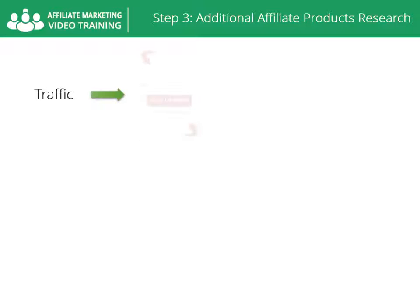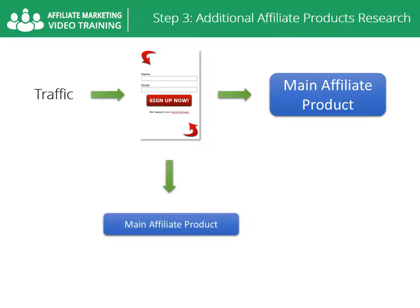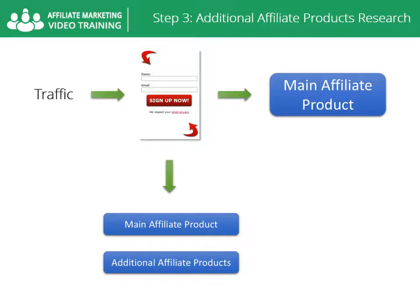All of your traffic will be sent to your squeeze page, which collects the contact information of your visitors who are highly interested in your topic. Then, besides sending your free subscribers straight to your main affiliate product, they will start receiving your emails talking about and pre-selling the main product you'll be promoting. You will prepare several emails to promote that product to your list, and then also start promoting directly related offers after those emails — for days, weeks, months, and years to come. All of this 100% automatic.